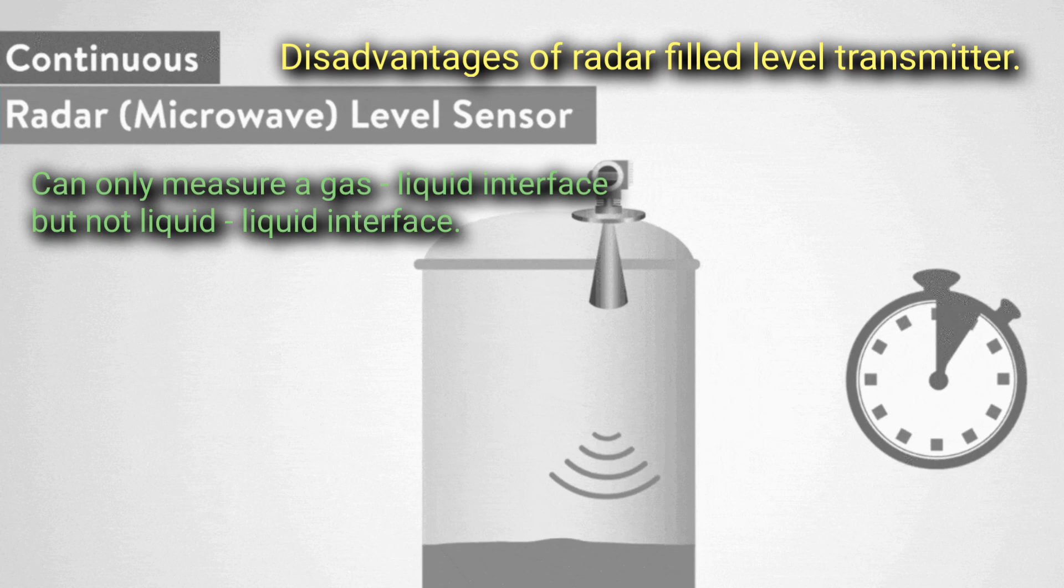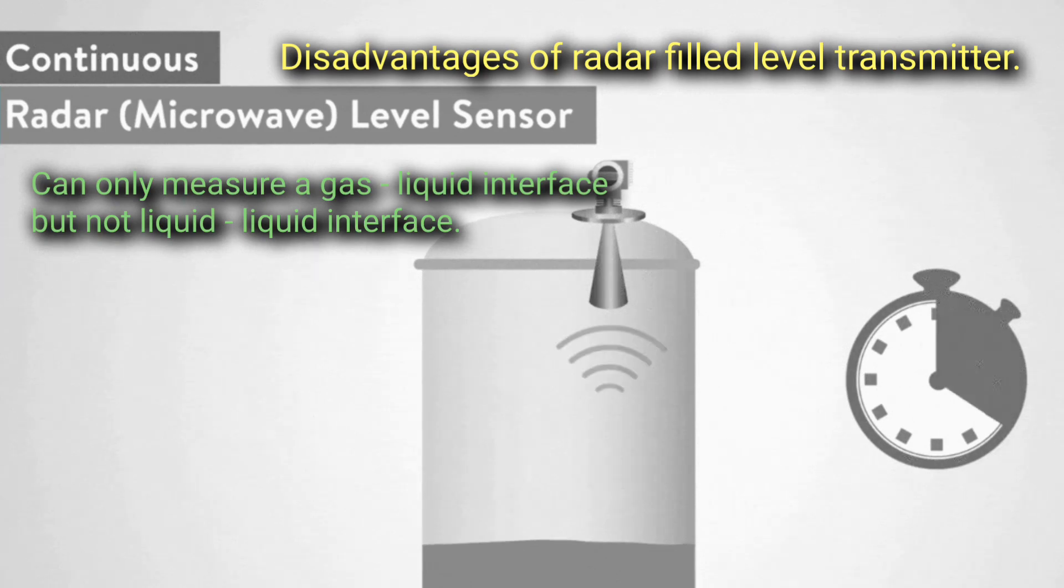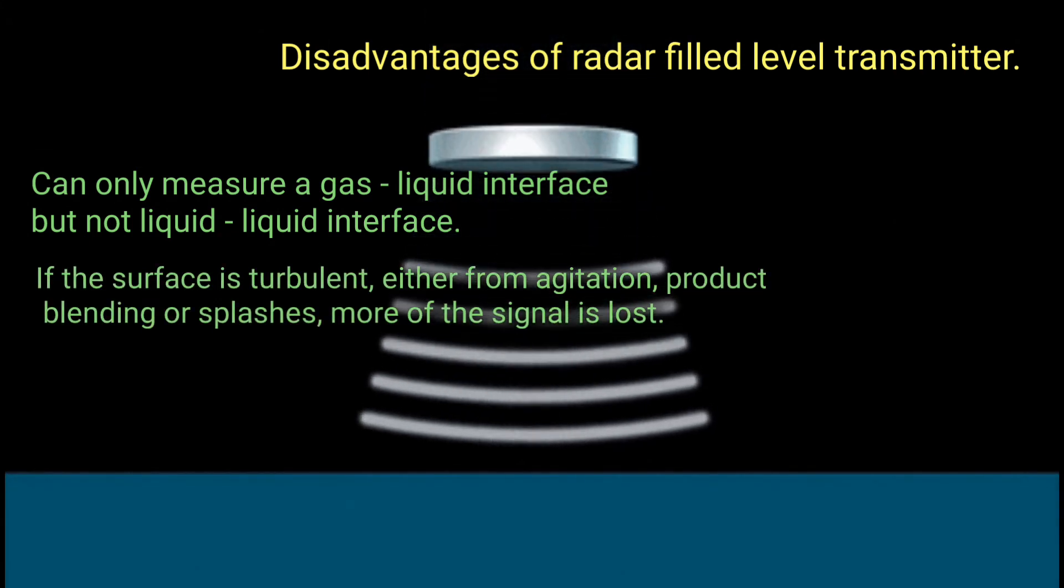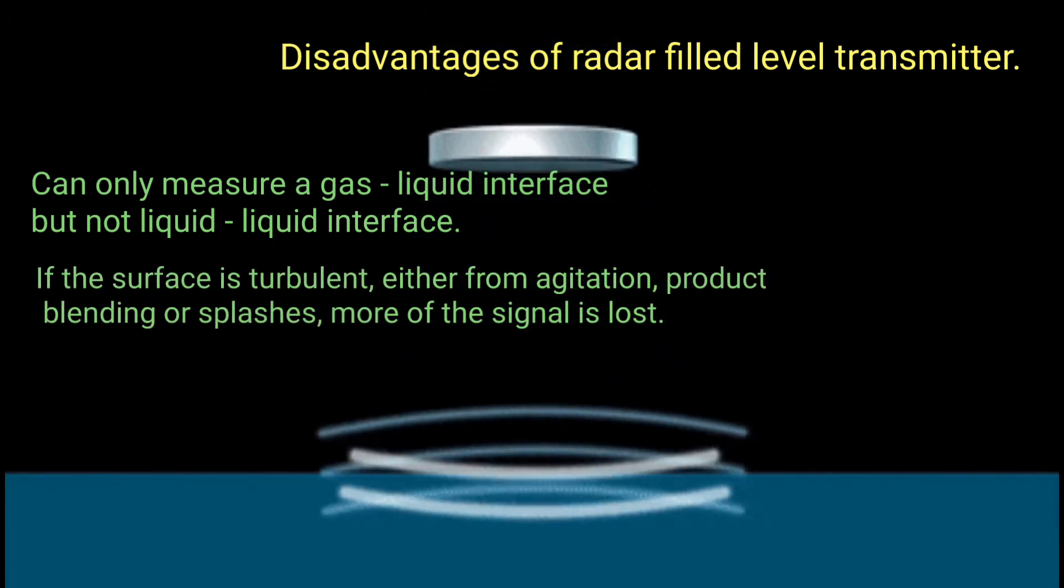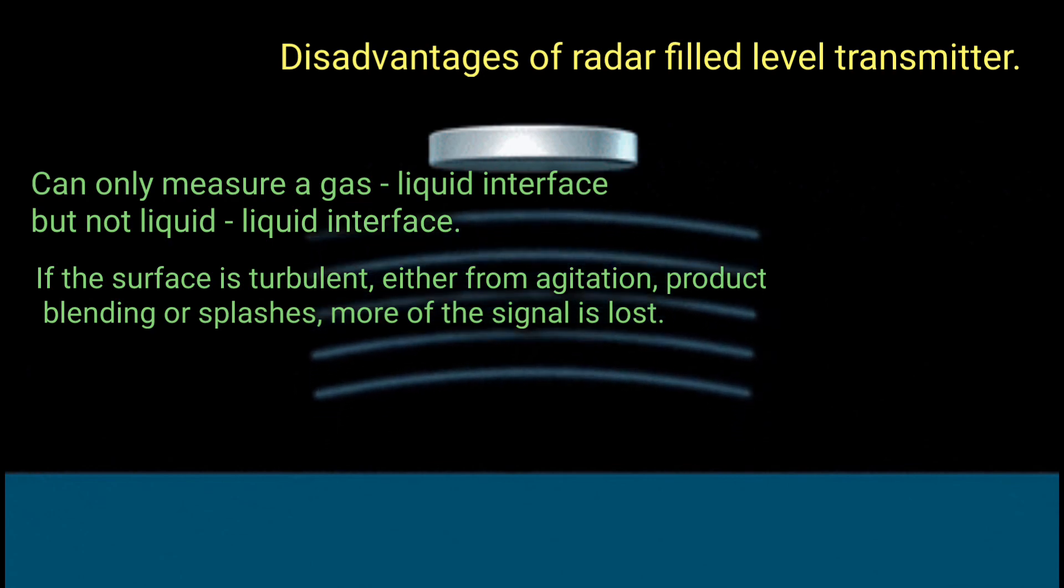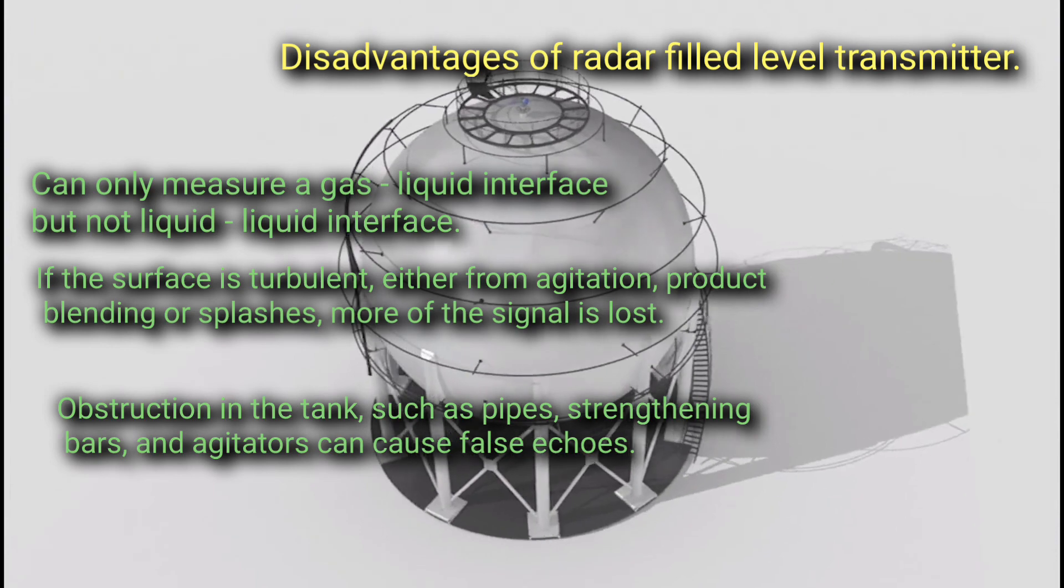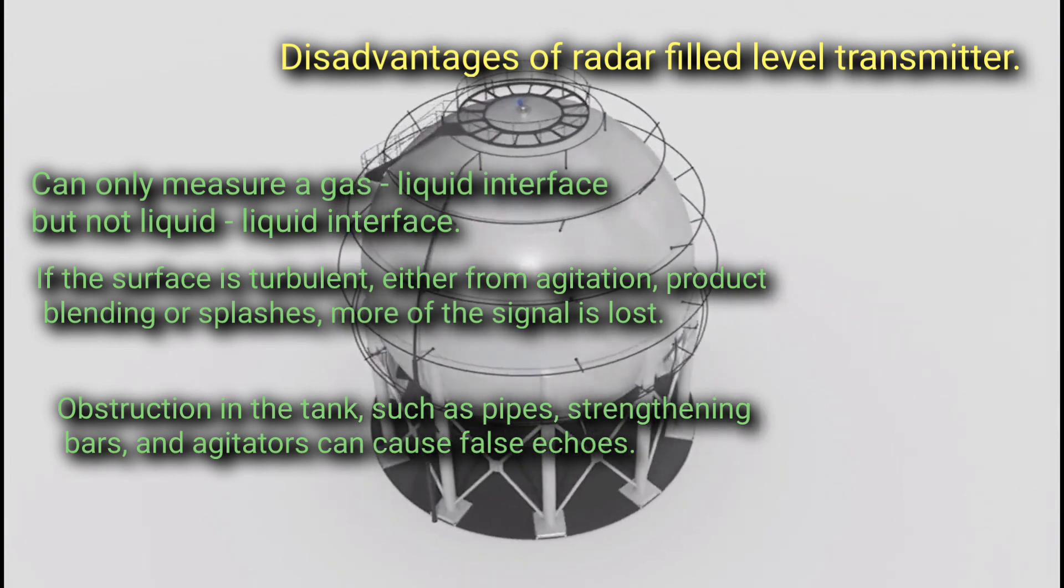Disadvantages of radar fill level transmitter: Can only measure a gas-liquid interface but not a liquid-liquid interface. If the surface is turbulent either from agitation, product blending, or splashes, more of the signal is lost. Obstructions in the tank such as pipes, strengthening bars, and agitators can cause false echoes.